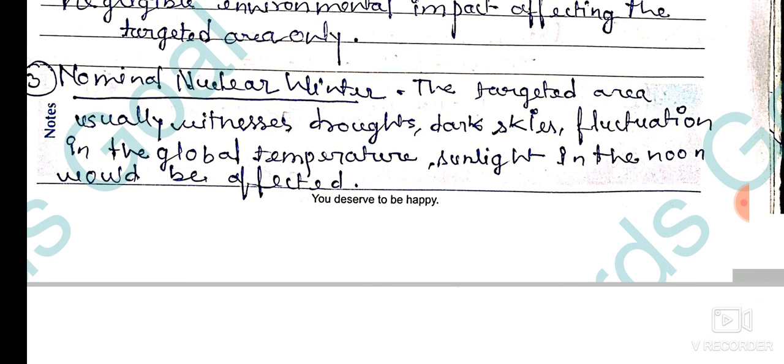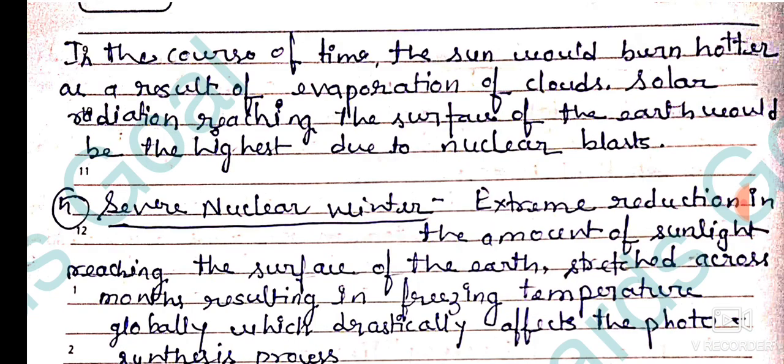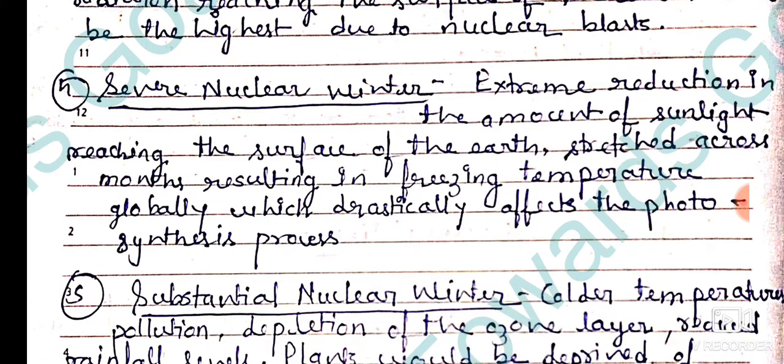Next is nominal nuclear winter. The targeted area usually witnesses dust, dark skies, fluctuation in global temperature, and affected sunlight at noon. In the course of time, the sun would burn hotter as a result of evaporation of clouds. Solar radiation reaching the surface of the earth would be highest due to the nuclear blast.